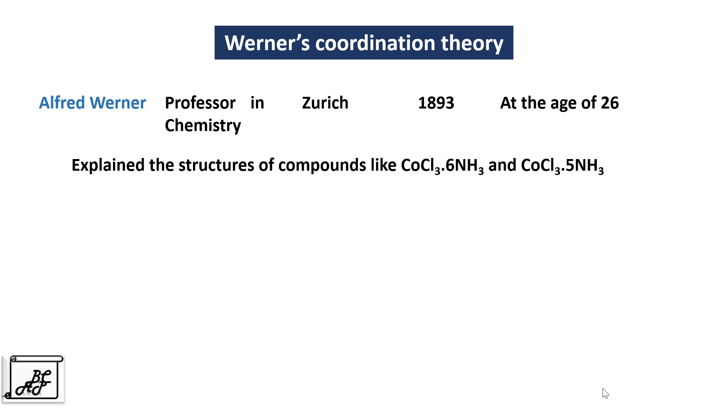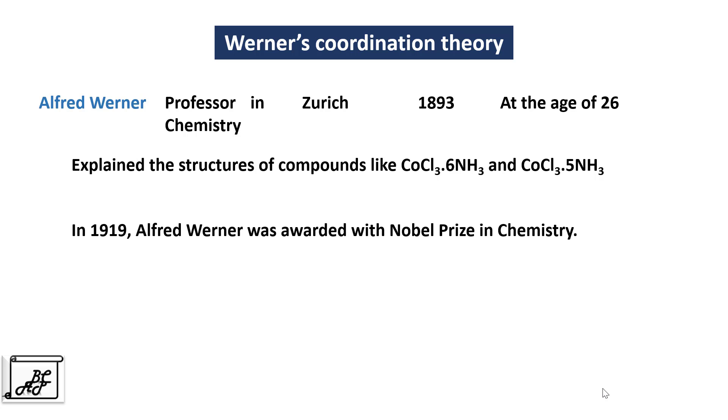For his untiring efforts over a period of 20 years, in 1919, Alfred Werner was awarded with the Nobel Prize in Chemistry.